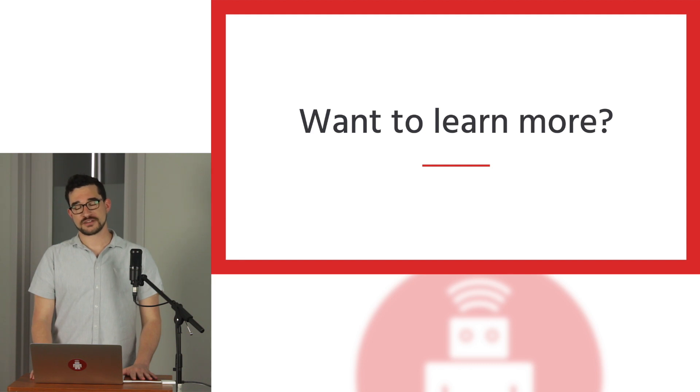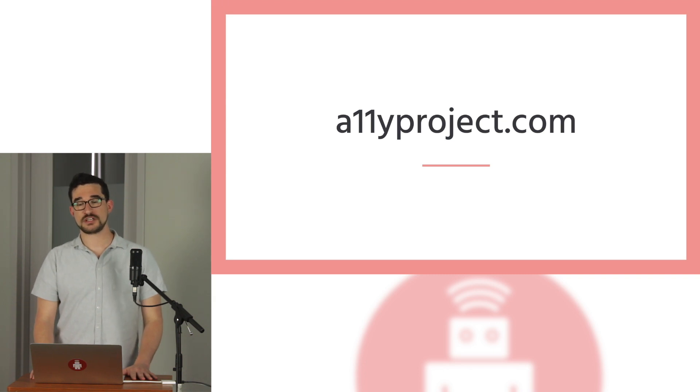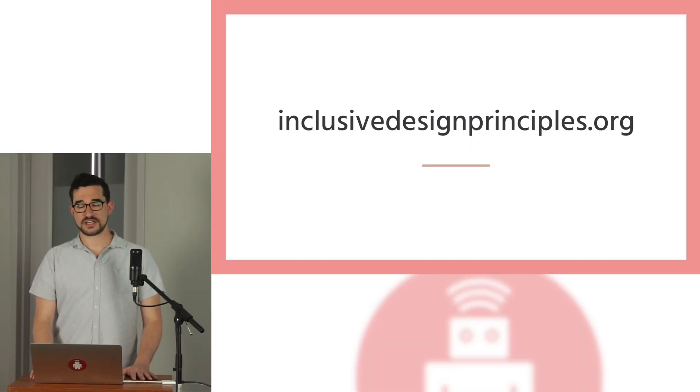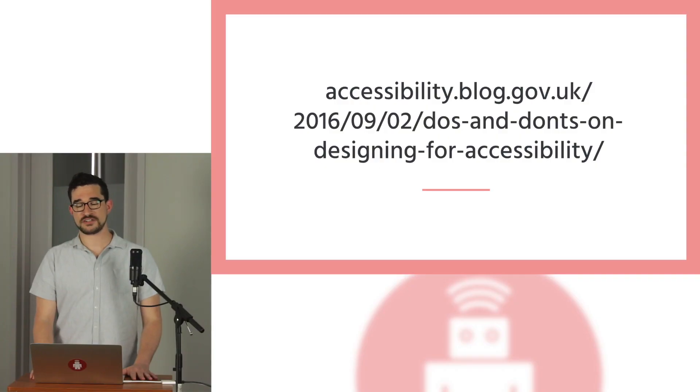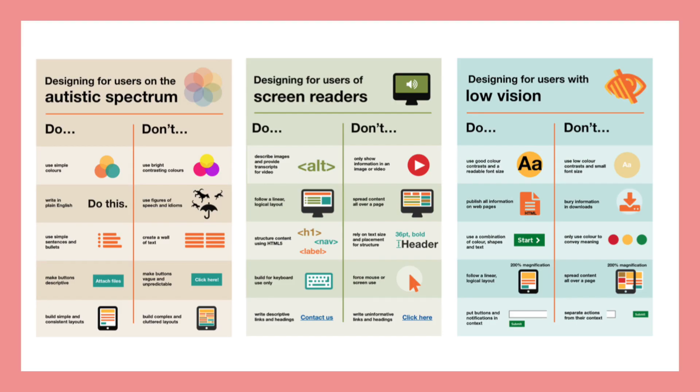If what I've said sounds interesting, there are also some resources you can check to learn more. The A11y Project is an open-source, community-driven effort to make web accessibility easier — it contains linked resources, checklists, tests, how-tos, and even common myths about digital accessibility. Another site is the Inclusive Design Principles, which has even more examples for each principle, easily shared with team members. Another favorite resource is the Do's and Don'ts on Designing for Accessibility, a set of posters put out by the UK's Government Digital Services team, with considerations for designing for different disability types such as low vision or dyslexia.